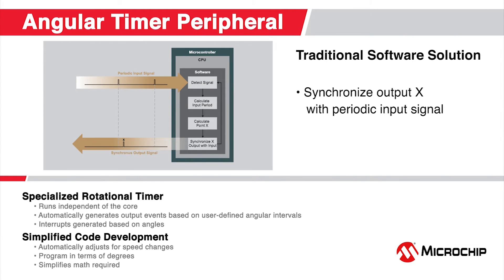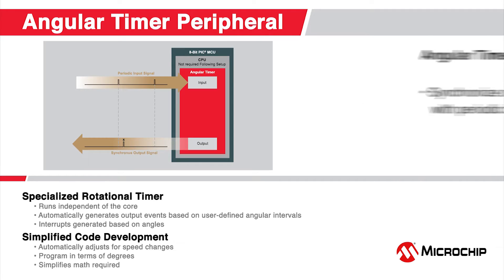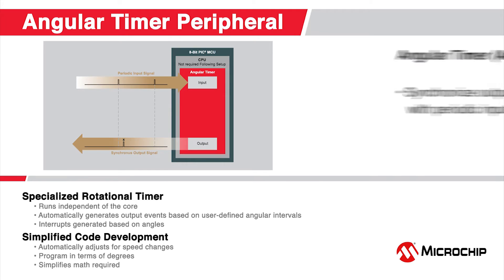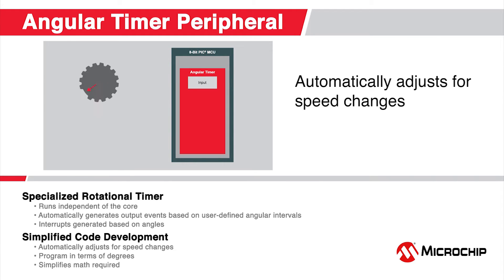Applications that require events to occur synchronously with a periodic signal often require that you develop CPU-intensive software routines. Microchip's 8-bit PIC microcontrollers with the Angular Timer peripheral provide a core-independent hardware-based solution that can improve your stability and performance in these applications, while freeing the CPU to focus on other critical tasks within the system.